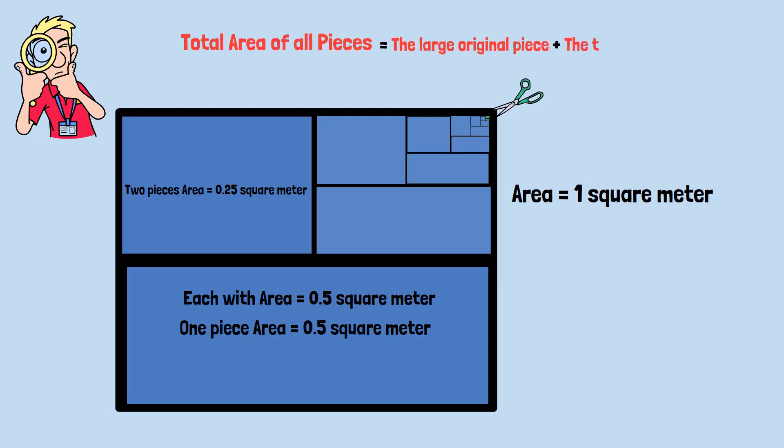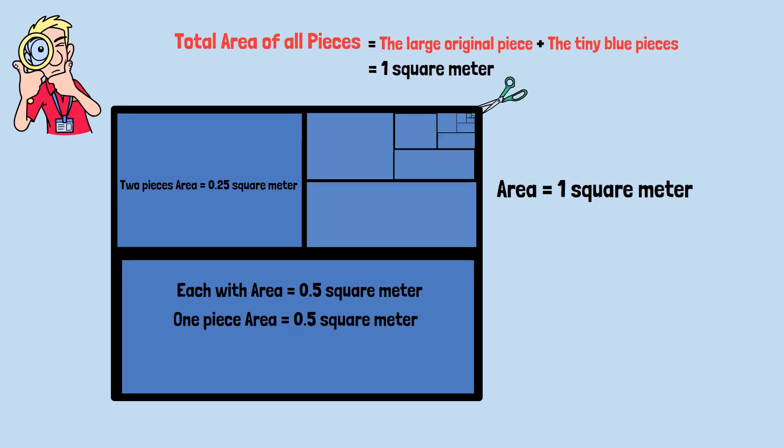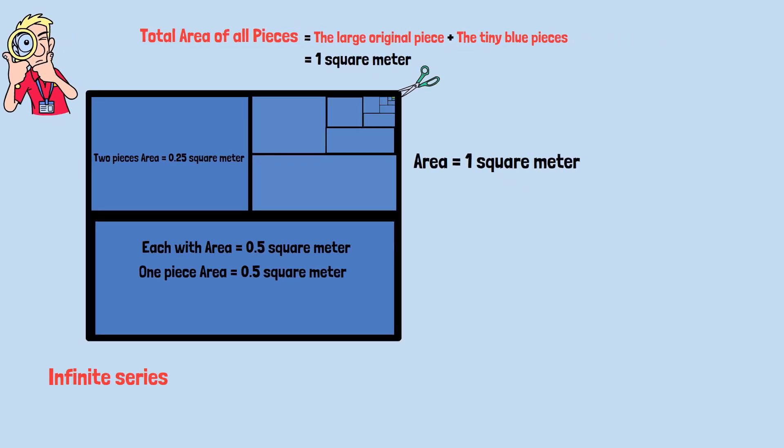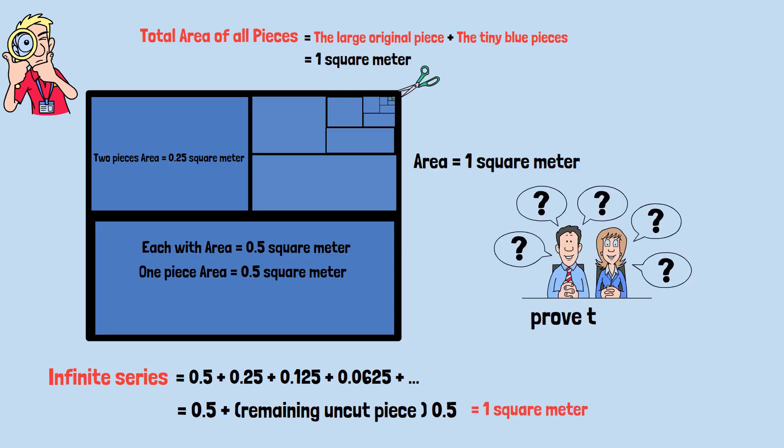The infinite series we've created, 0.5 plus 0.25 plus 0.125 plus 0.0625 and so on, adds up to exactly 0.5, which combined with the remaining uncut piece, also 0.5, gives us our original one square meter. But how do we prove that this infinite series actually equals 0.5?